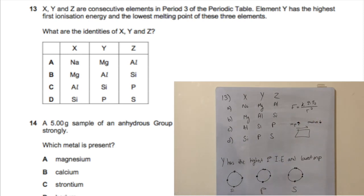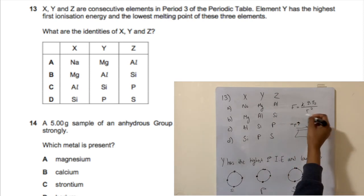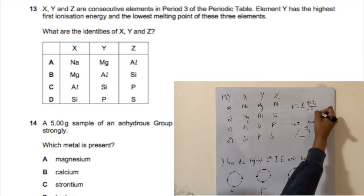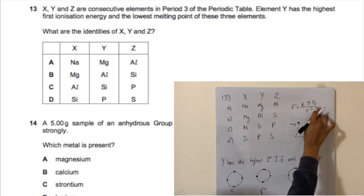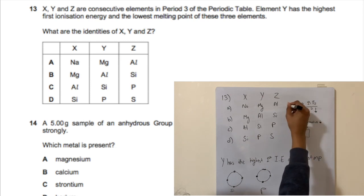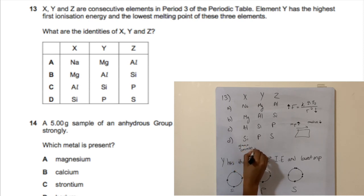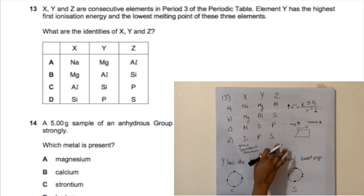As atomic radius decreases, the force of attraction is stronger, so more energy is needed to melt the element — consistent with Coulomb's law, where force is inversely proportional to radius. However, there are exceptions: silicon has a giant covalent structure with a very high melting point, much higher than phosphorus or sulfur, so option C is eliminated.